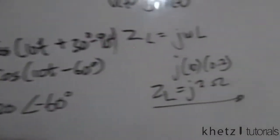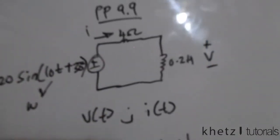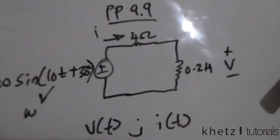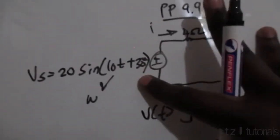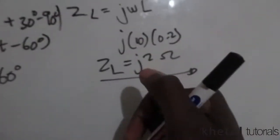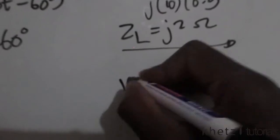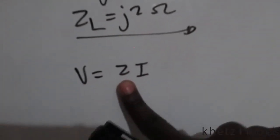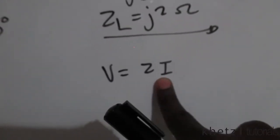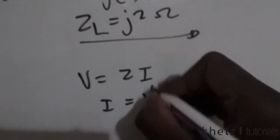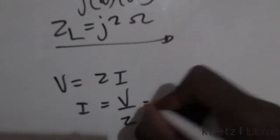Now that we have the phasor, we proceed to find what we've been asked for. Since both elements are in series, they share the same current, so we can divide the total voltage by the total impedance. Using v equals z times i, to find i we say i equals v divided by z.